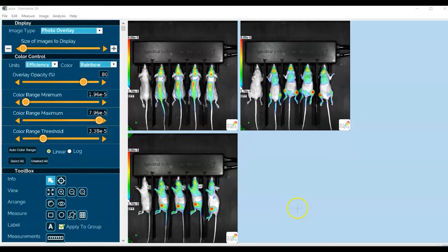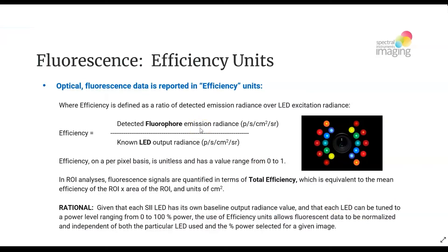You may ask: what exactly is efficiency? Efficiency is a ratio value where we're looking at the relative radiance of the fluorophore detected over the known radiance output of the LED that is being used to excite the fluorophore in the first place. Efficiency values generally range from zero to one, where zero would be no detected fluorophore signal, and one would be where the fluorophore signal is essentially equal to the LED output — which quite honestly never happens.